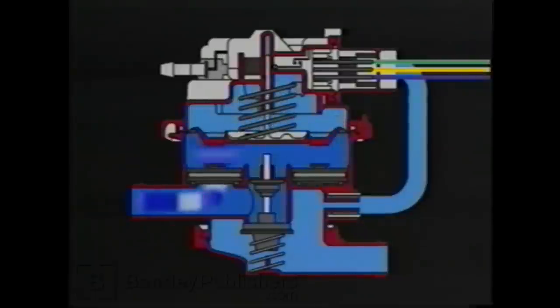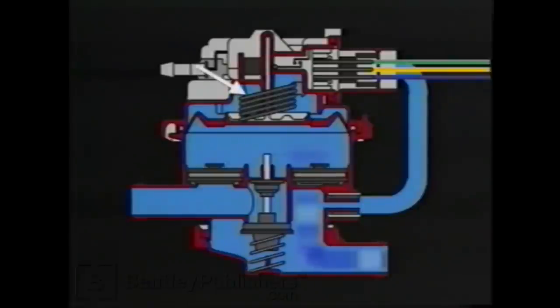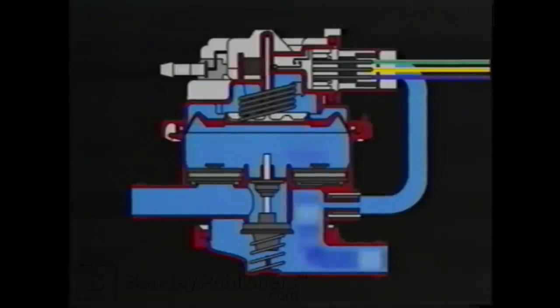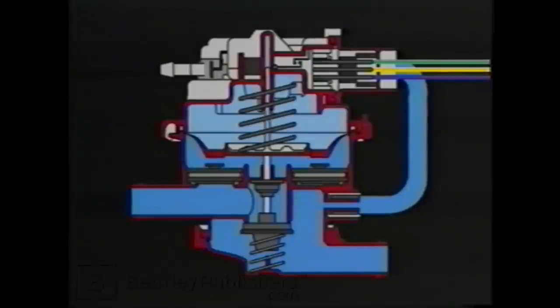Whenever the engine is running, vacuum is applied to the vacuum switch. This switch will apply vacuum to the upper chamber of the pump when it receives a ground signal from the ECM — a duty cycle pulse of approximately 40%. When vacuum is applied to the upper chamber, the diaphragm will be pulled up, compressing the spring above the diaphragm. At the same time, air will be pulled in to fill the lower chamber through the one-way inlet valve. When the vacuum switch closes, the spring will push the diaphragm down, and the air in the lower chamber is pushed out of the one-way outlet valve into the EVAP system.